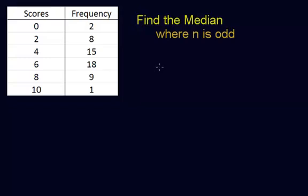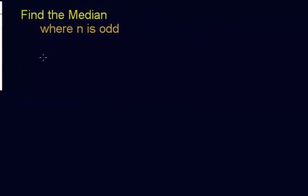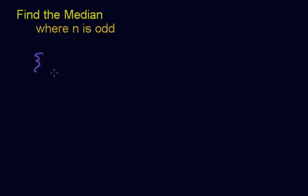So let's start with an easy case. Ignore the frequency distribution here. Let's just take an example of a set of numbers where we have an odd number set. We have three elements here. Where is the median? The median is the middle number, and that would be right here.